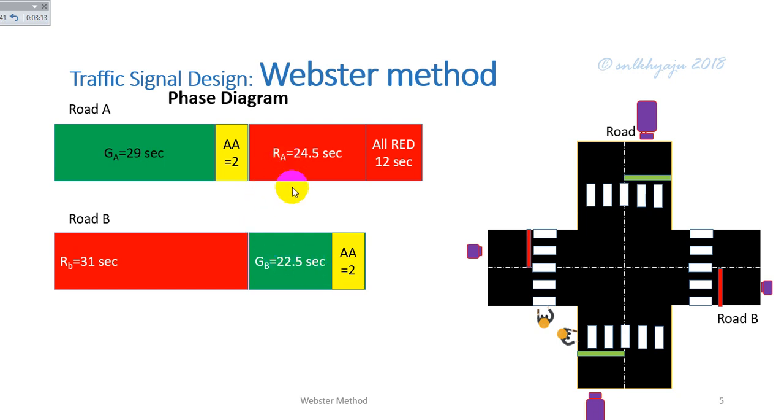All red time for road B. In this video, it shows the green time for road A and red time for road A. Similarly, when red for traffic at A, that is green for the pedestrians for road B.